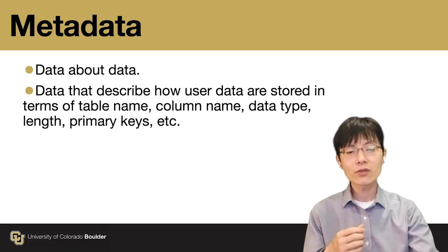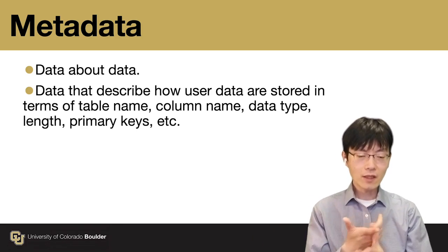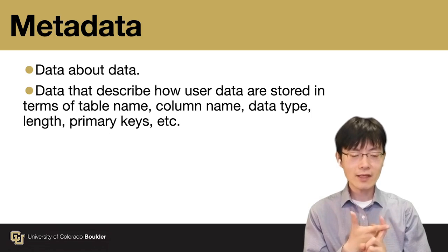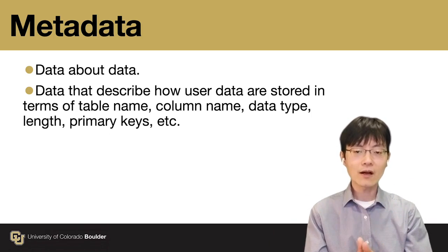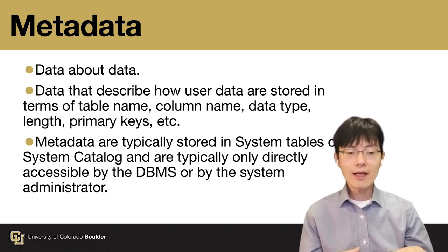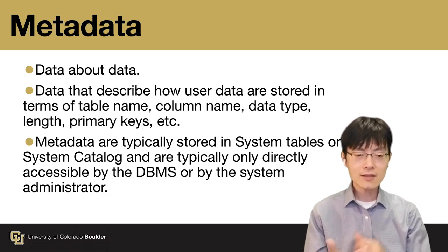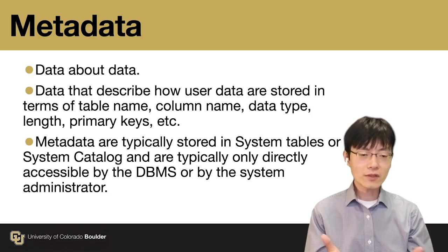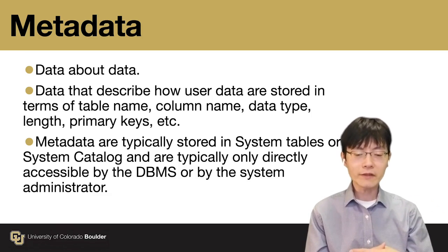Metadata is data about data. Basically, it describes the data stored in terms of the column names, the data type, the length, the primary key — the structure of your data is called metadata. That will be saved in our database as well, in system tables or system catalogs, and may not be seen by you directly. Only users with a high level of authority will be able to modify and change it.